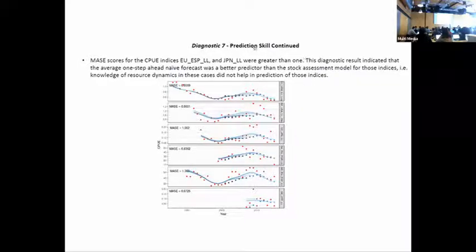This is prediction skill - it's a useful diagnostic that you can compare across models. The different CPUEs are in each panel here. The circles are the observed, the lines are the one-step-ahead forecast, and these MACE scores are reported here. Here's a MACE score above one and here's another MACE score above one. In this case the MACE scores for CPUE indices for two of the important indices were greater than one, so this diagnostic result indicated that the average one-step-ahead naive forecast - that means if you used last year's observations that would be better than the model at predicting these indices.